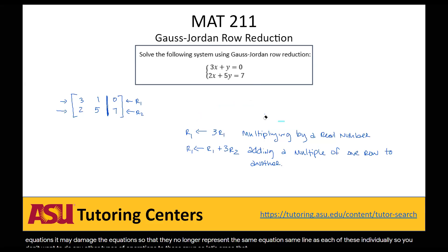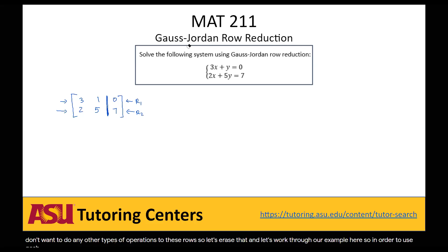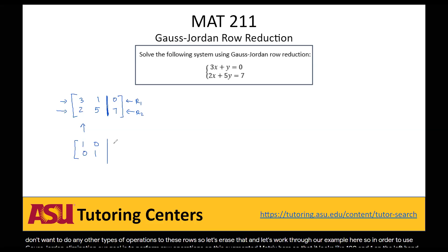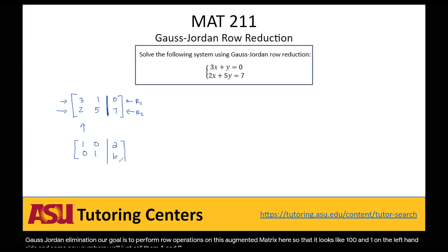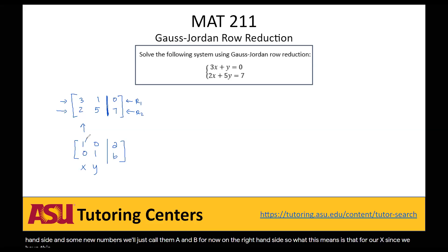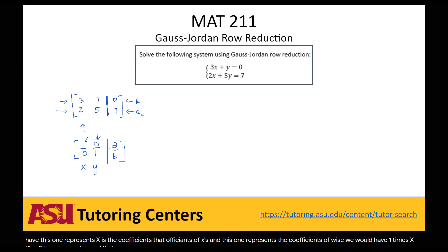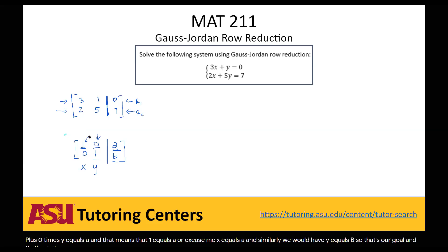So let's work through our example. In order to use Gauss-Jordan elimination, our goal is to perform row operations on the augmented matrix so that it looks like 1, 0 / 0, 1 on the left-hand side and some new numbers a and b on the right. This means 1x + 0y = a, so x = a, and similarly y = b. That's our goal.